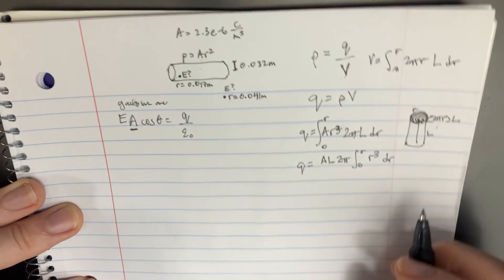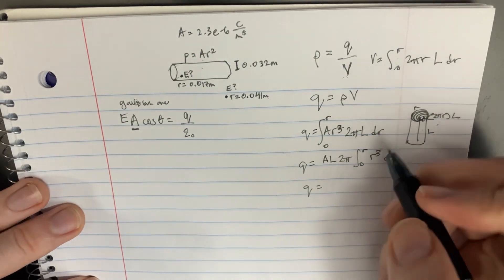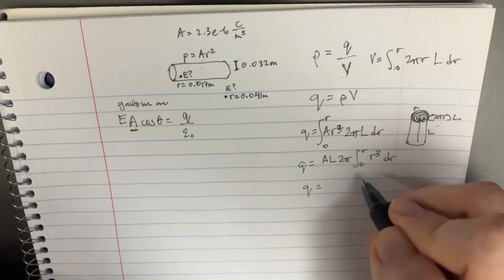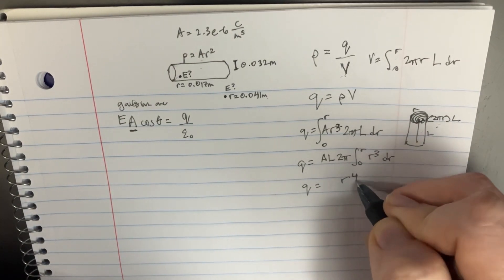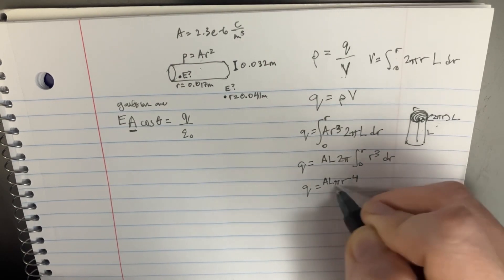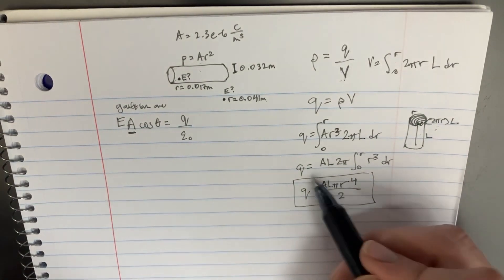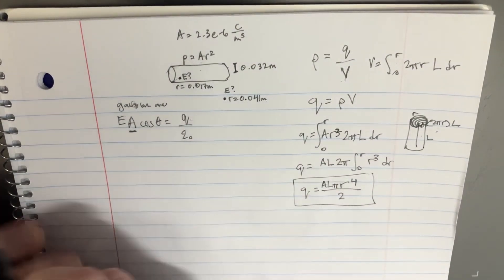So that's just going to integrate pretty easily down to Q equals, we would say, r to the fourth. And there's just going to be the A, L, and then π. And I think there's going to be divided by two at the end over here. So that's just kind of finishing the integral here for Q. That's what we're going to plug in here.